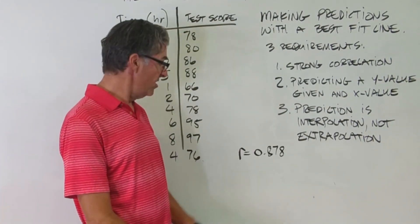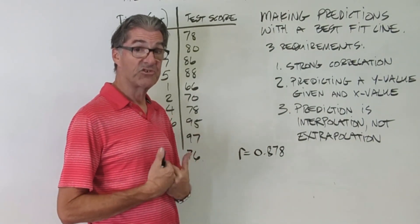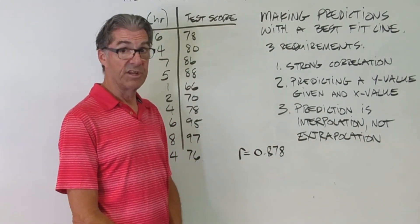So when I use my calculator, what I get for my r value is 0.878. So yes, we do have a strong correlation. So now we're free to make predictions.